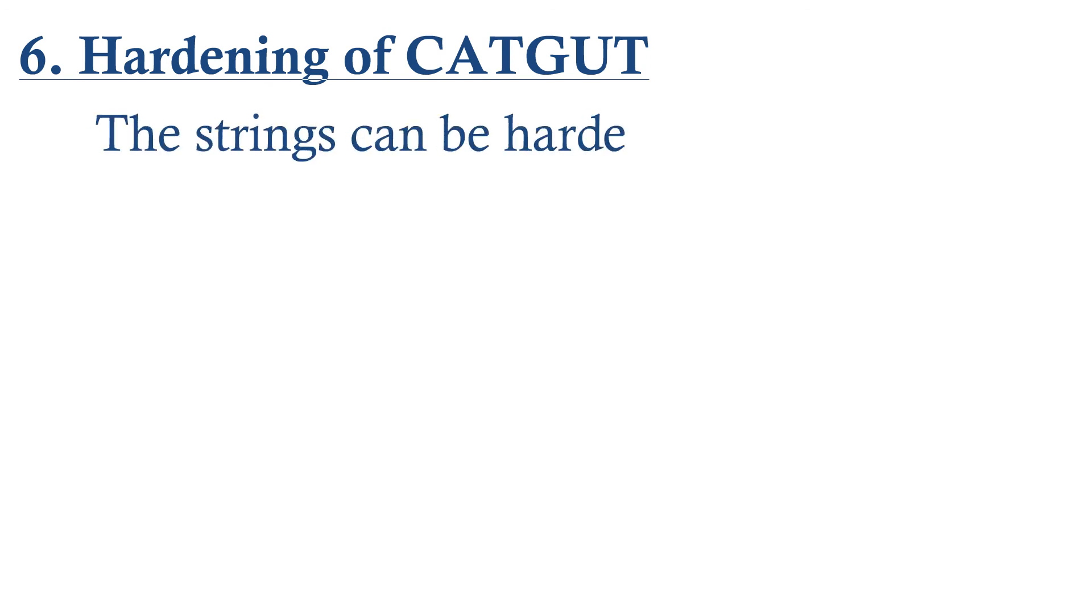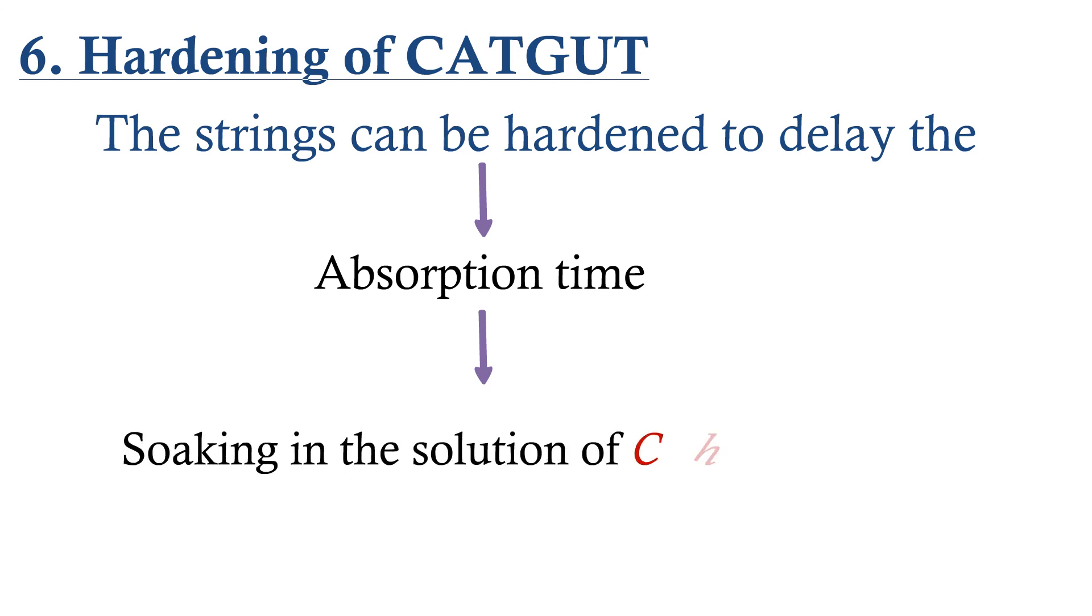The final part is hardening of catgut. The strings can be hardened to delay the absorption time by soaking in the solution of chromic acid. That's all about catgut.